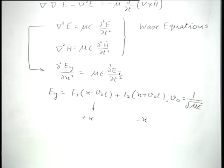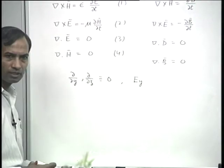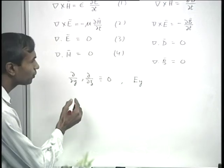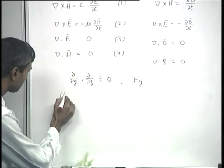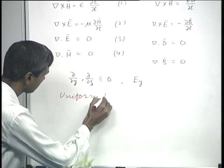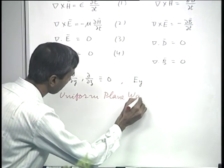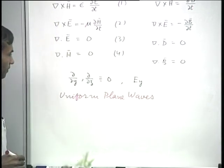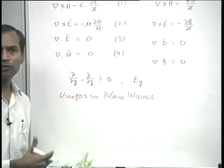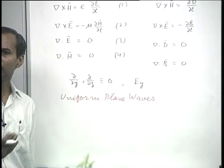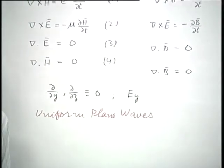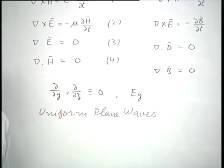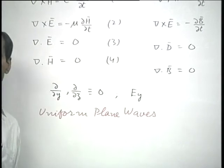The solution obtained under the simplifying assumptions del by del y and del by del z equal to zero is of considerable importance and is known as uniform plane waves. Far away from a source, most waves can be considered—at least locally—as uniform plane waves. For example, signals received from a satellite or signals far away from an antenna satisfy the description of uniform plane waves.